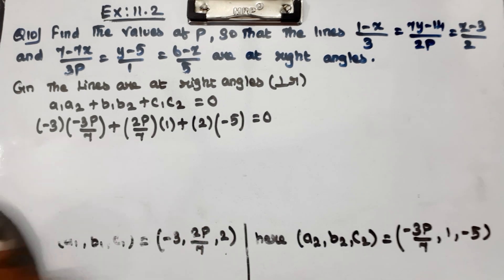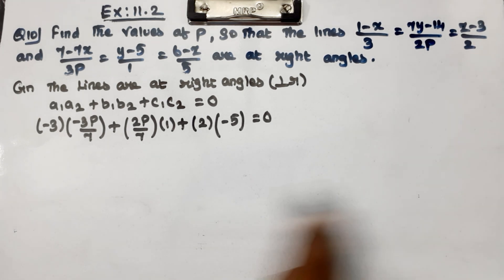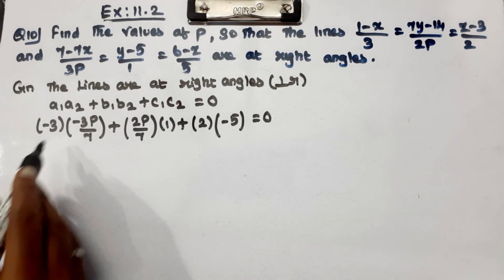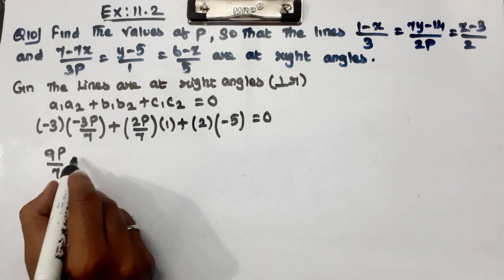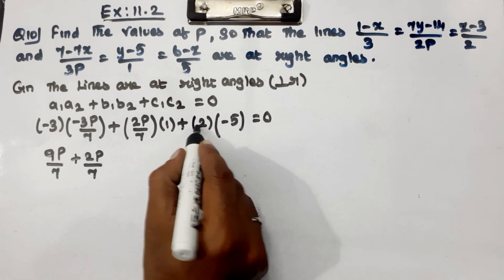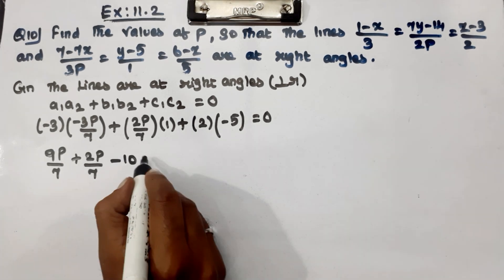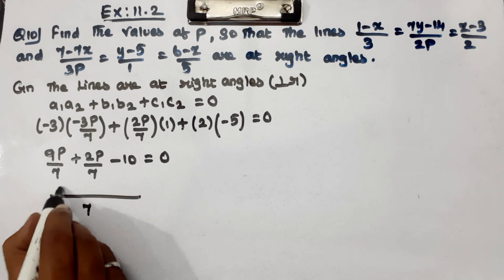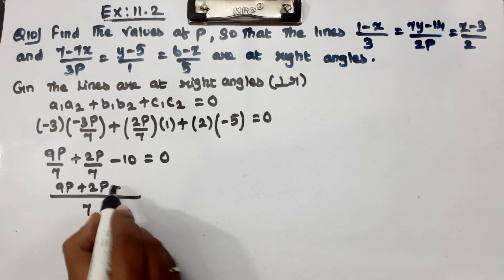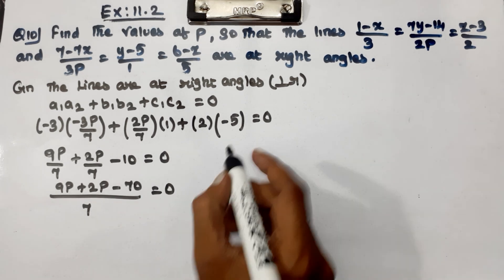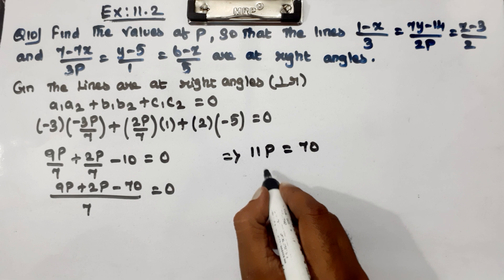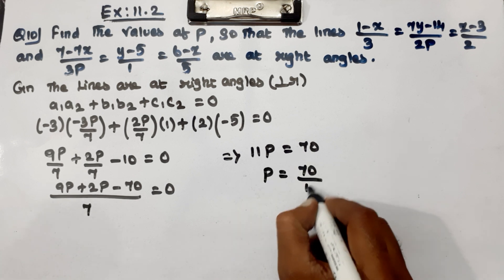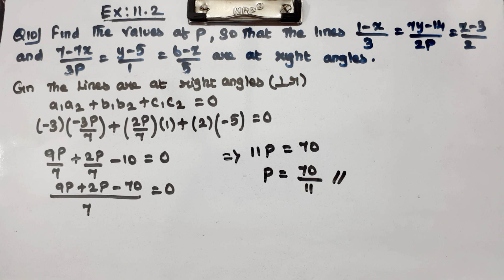Simplify. 9p divided by 7 plus 2p by 7 minus 10 equal to 0. LCM 7, so 9p plus 2p minus 70 equal to 0, which implies 11p equal to 70, so p equal to 70 by 11. This is the answer for question number 10.